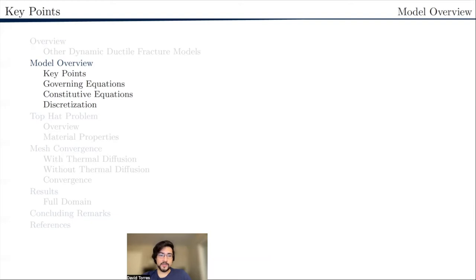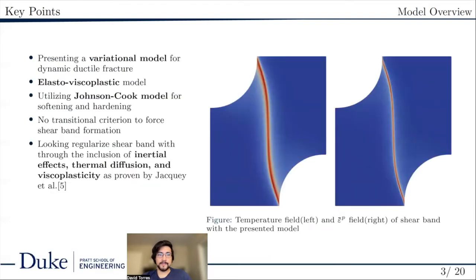Now we're going to go over some key points of our model. We are presenting a variational model that is elasto-viscoplastic for dynamic ductile fracture. No transitional criteria is employed to enforce shear band formation or influence direction.